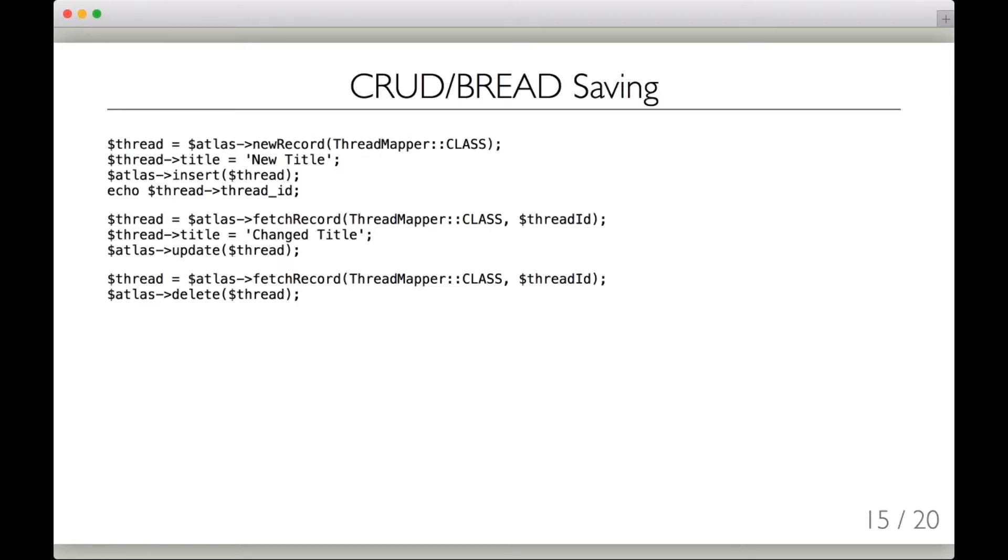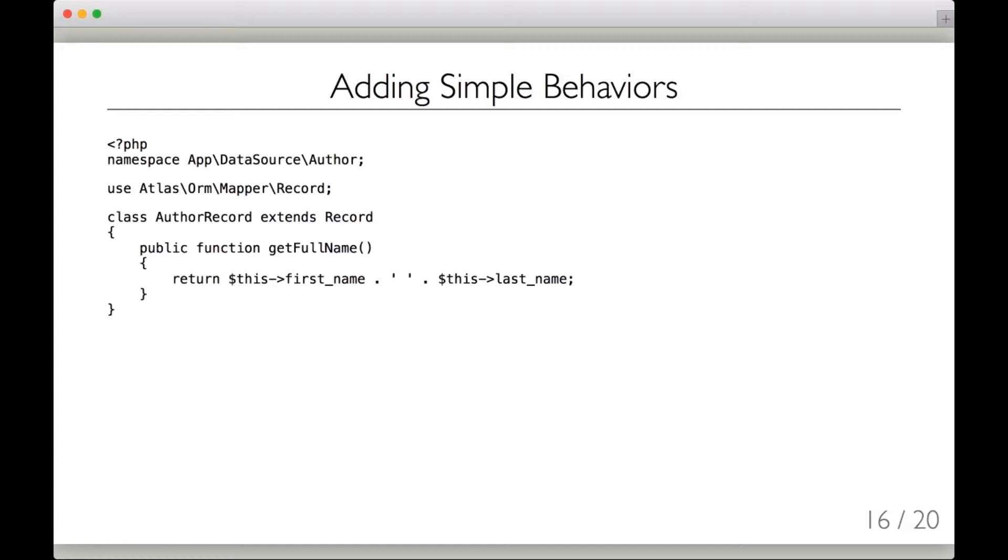Now, once you've reached the point where simple CRUD is not doing it for you, you can begin to add simple behaviors on the individual record objects. In this case, we've got our author record, and we'll say, for example, that throughout our system we find that we need to get the full name of the author over and over again. Well, instead of repeating that logic throughout the system, we can just put a method on the author record and say get me the full name by concatenating the first name and the last name. The author record has access to all of the rows on the author table and has access to all of its related elements if they happen to be present in that record. So you can do calculations within a record on all of its related elements.